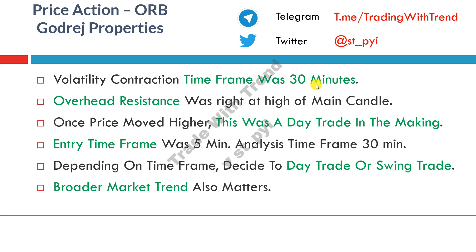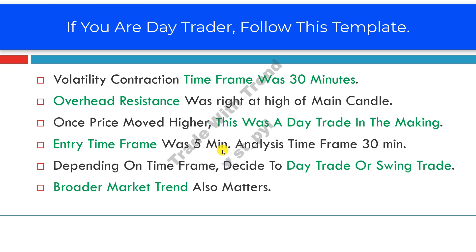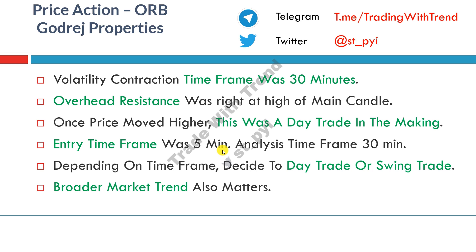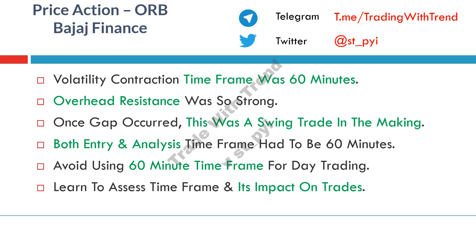The pattern occurred on a 30-minute timeframe chart, overhead resistance was visible but not as strong as in the Bajaj Finance trade. For entry, I preferred the five-minute chart, mainly because if you are experienced, a five-minute combined with a 30-minute timeframe can give really good entry and exit opportunities. For beginners doing day trading, start with something like a 15-minute or 30-minute timeframe. Let me now play out the live module for Bajaj Finance and the Godrej Consumer Products trade.